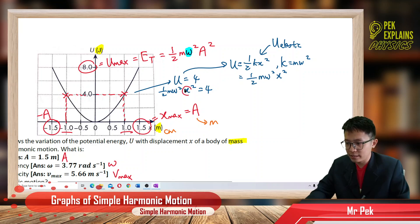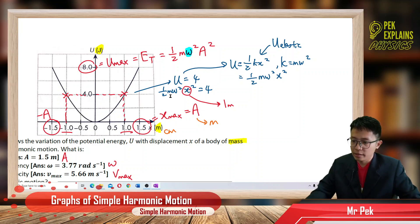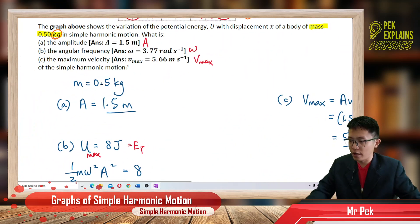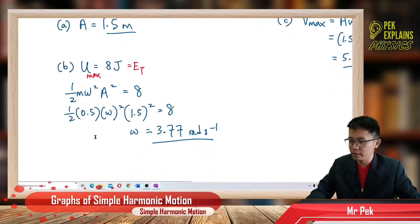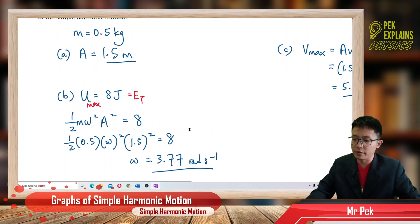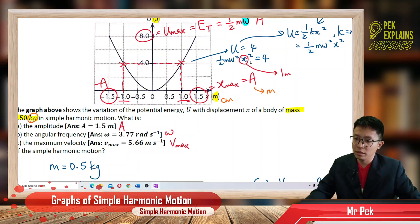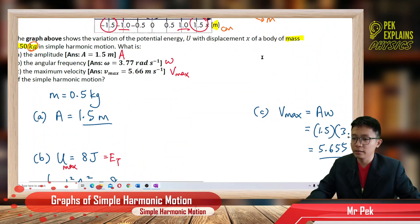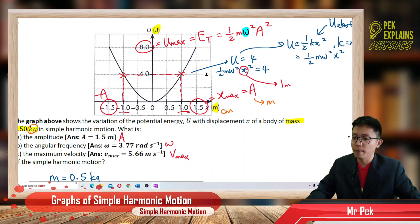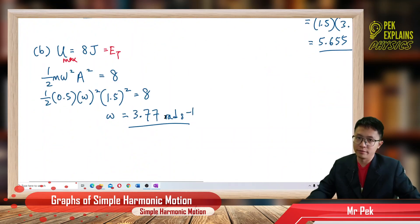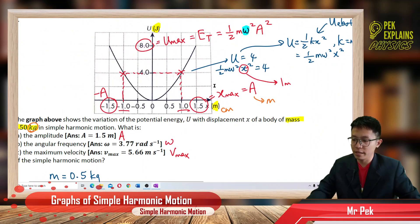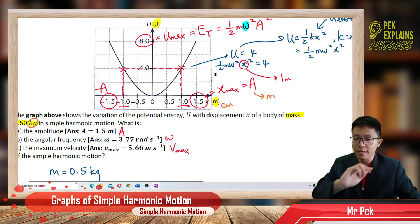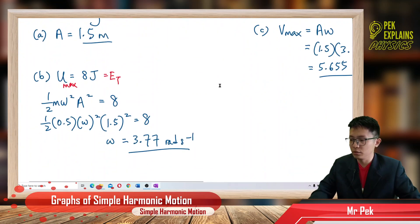Substituting mass = 0.5 kg, omega = 3.77, and x = 1 meter into the formula should give the same result. You can try this yourself — you will get omega equal to 3.77 radians per second confirming the answer.